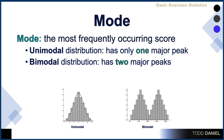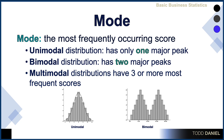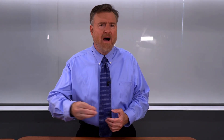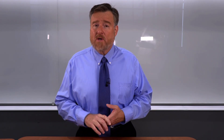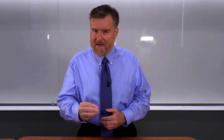We also have an option for multimodal distributions, which would be three or more most frequently occurring scores. However, when we encounter three, four, or five modes, we don't call them trimodal, quadrimodal, etc. We just call them multimodal. And when you have multimodal data, you usually have something wrong in your data set. You're going to need to look at what's happening because your data are probably a mess.